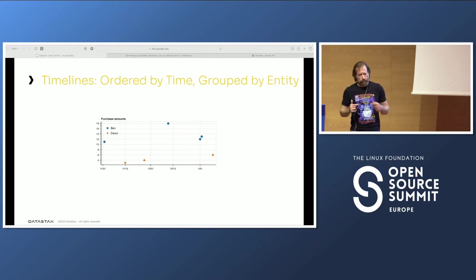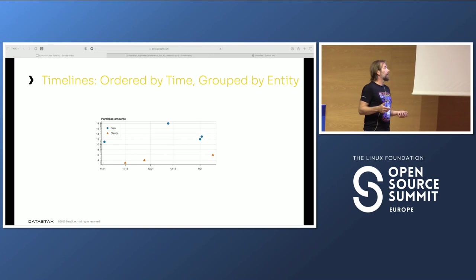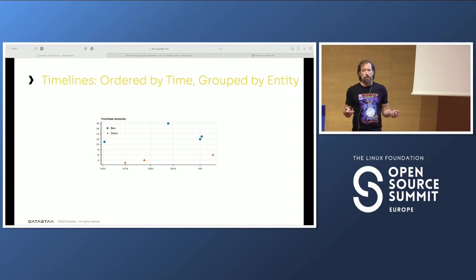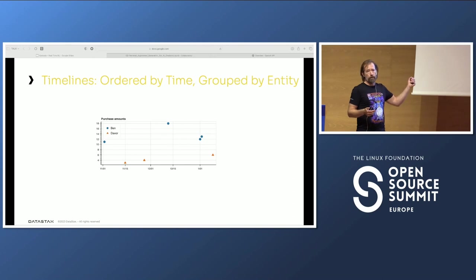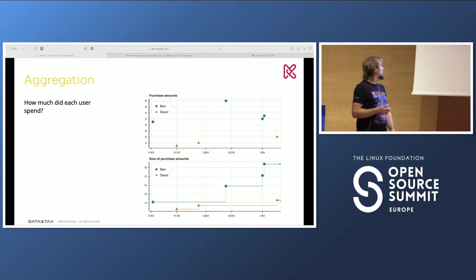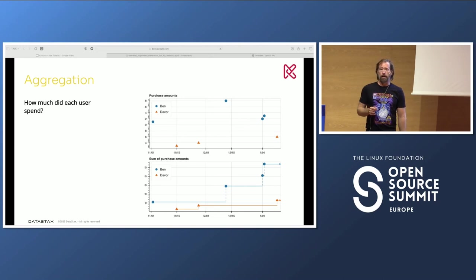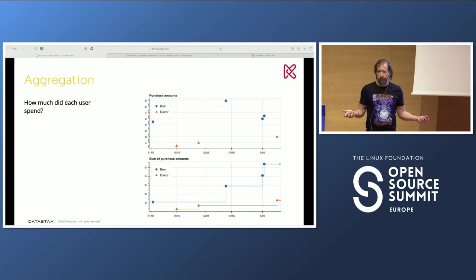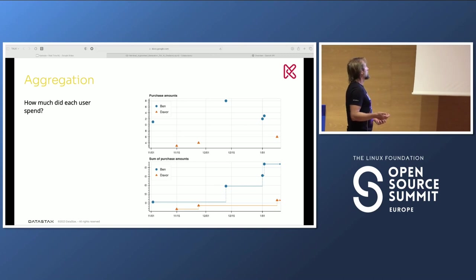Jumping in — this is going to take us back to basics. If you think about a timeline, it is just discrete points on a timeline with some values grouped by entities. X-axis is time, Y-axis is some value, entities grouped by color. The first thing we want to do with that is aggregate it. Here we're just saying, what's the sum of each entity over time? We're taking it from a discrete timeline to a continuous timeline. The question for us is: how much did each user spend over time?